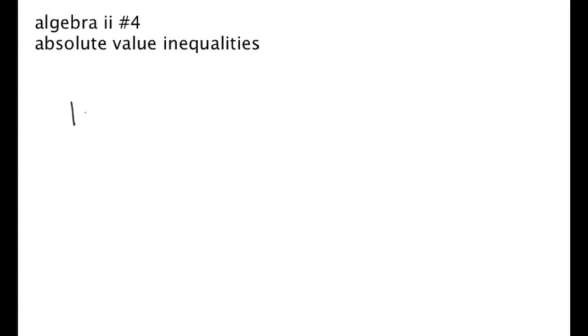The first thing before we tackle inequalities, I just want to go over a simple absolute value equality, just so we get the concept of what absolute value even is. So let's say we have the absolute value of 7 minus x plus 2 is equal to 12. Before we do anything, we need to get anything not in the absolute value over to the right-hand side. So we subtract both sides by 2 and rewrite this as the absolute value of 7 minus x is equal to 10.